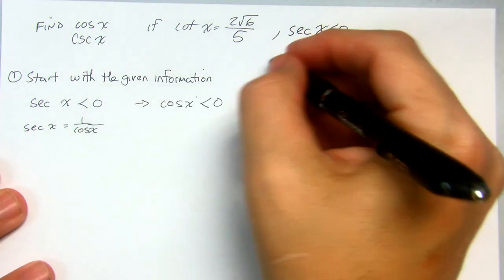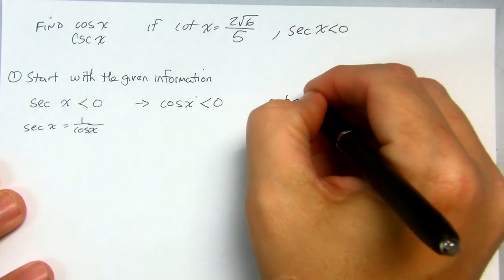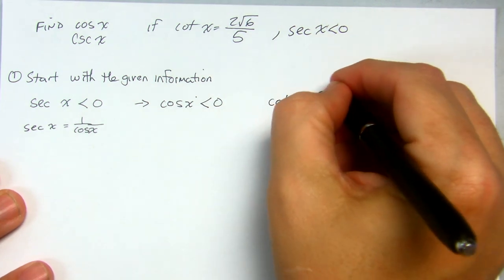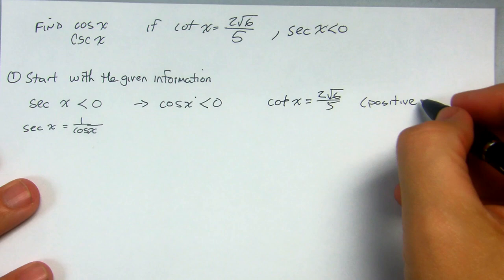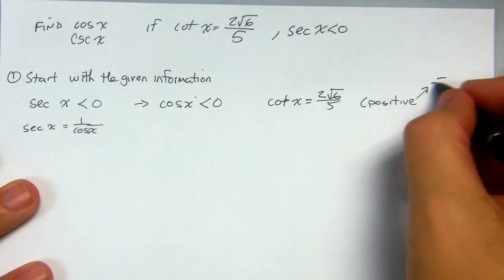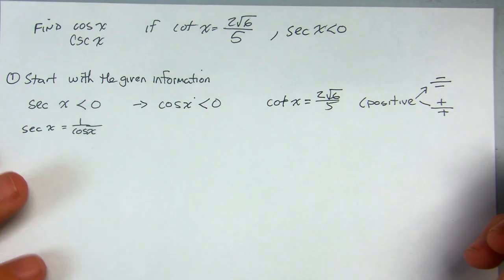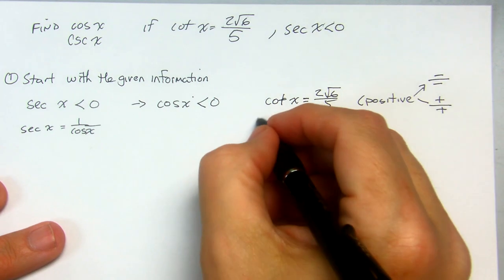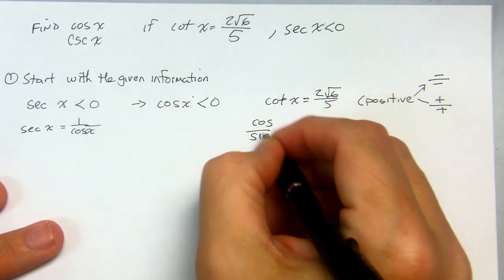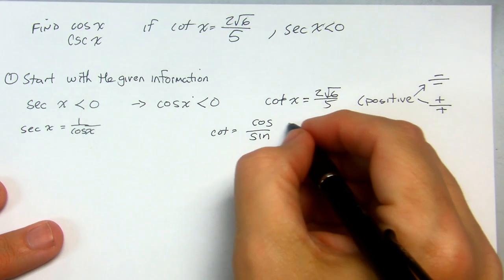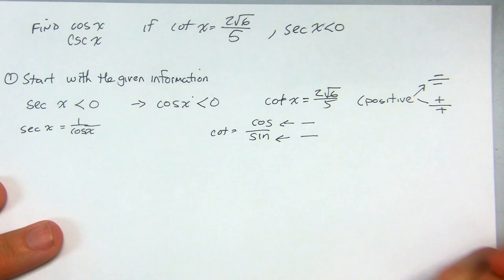The second part: I know the cotangent of x is 2 radical 6 over 5, which is positive. Remember, you make positive numbers by having negative divided by negative or positive divided by positive. The cotangent is the cosine over the sine. I already know the cosine has to be negative, so that tells me the sine has to be negative as well.